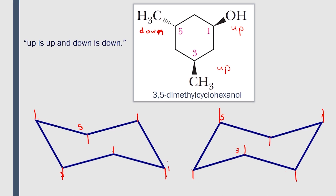Now let's replace the groups. The hydroxyl group is up the plane, so it should be equatorial because the axial at carbon 1 is down. Position number 3 is also up, so it's equatorial as well because the axial is down. And the methyl group at carbon number 5 is down, so it should be axial. So we have two equatorial groups and one axial.